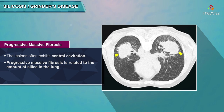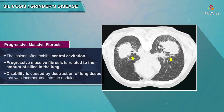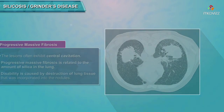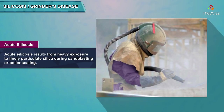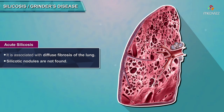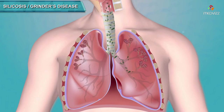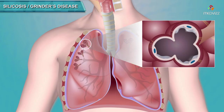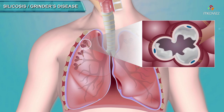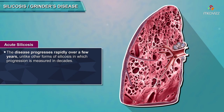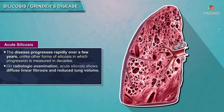PMF is related to the amount of silica in the lung, with disabilities caused by destruction of lung tissue incorporated into the nodules. Acute silicosis, now uncommon, results from heavy exposure to finely particulate silica during sandblasting or boiler scaling. It is associated with diffuse fibrosis; silicotic nodules are not found. Dense eosinophilic material accumulates in alveolar spaces, producing an appearance resembling alveolar lipoproteinosis or silicoproteinosis, due to outpouring of alveolar surfactant lipids and proteinaceous debris. Radiologically, acute silicosis shows diffuse linear fibrosis and reduced lung volume.